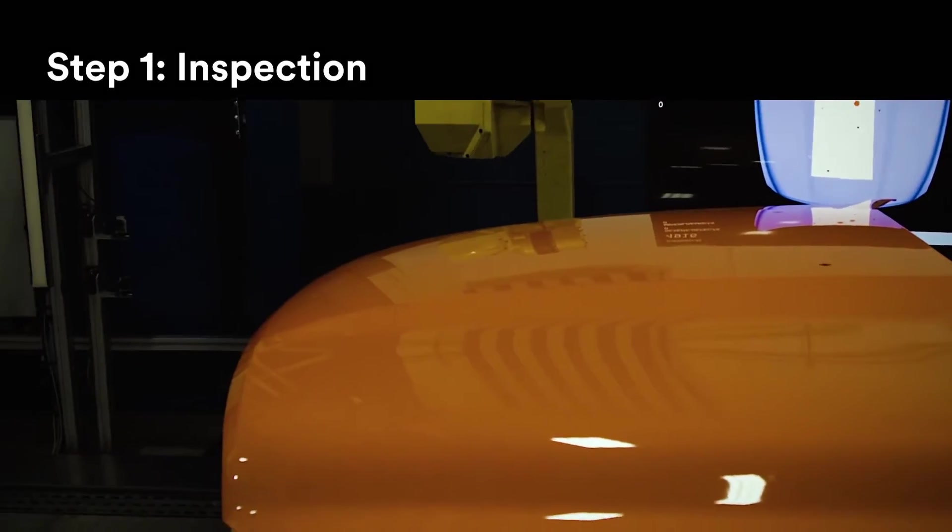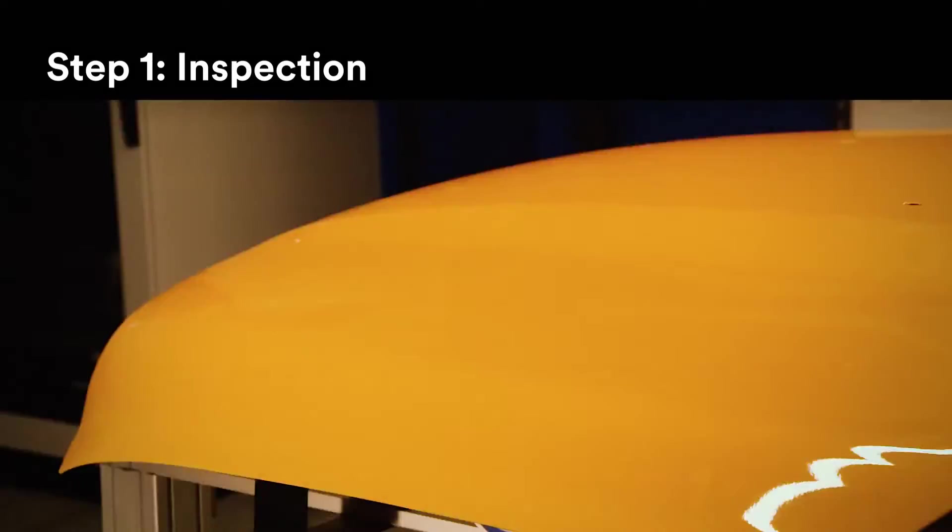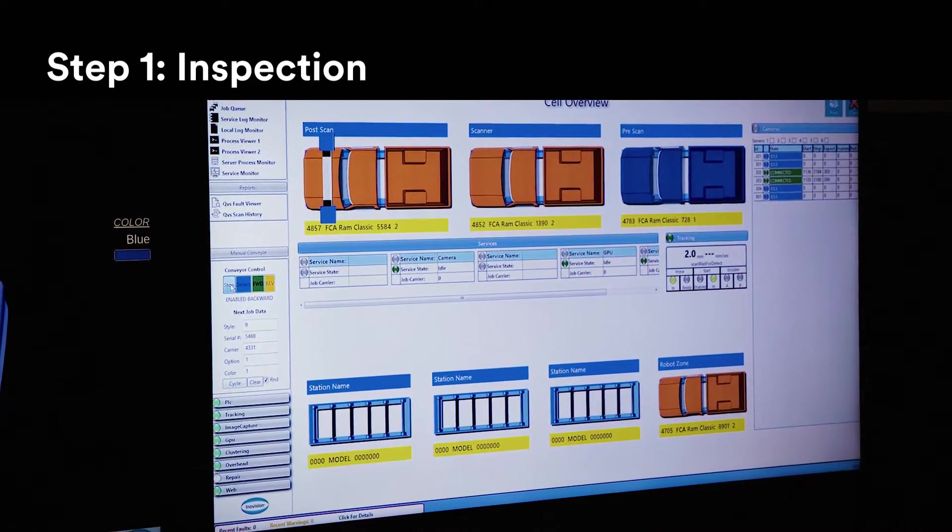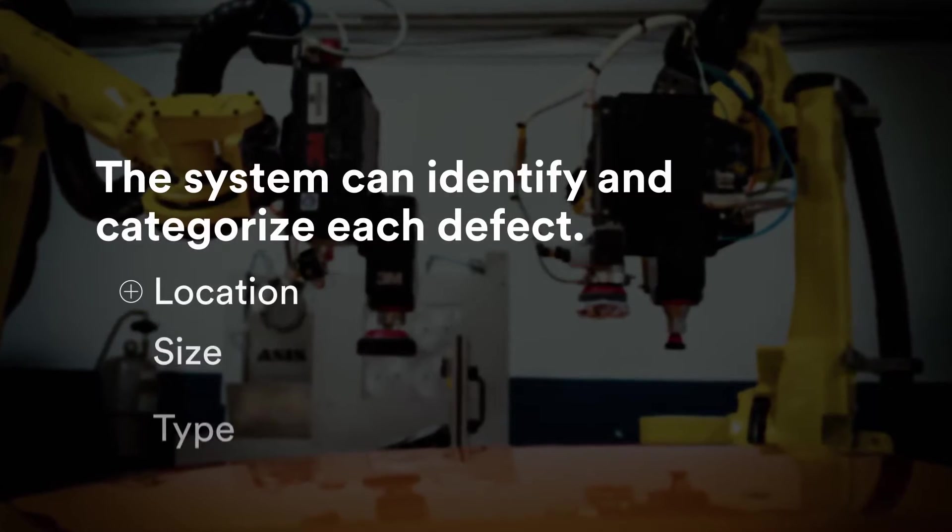The process begins with a high-tech vision system that inspects the vehicle from every possible angle. The system can identify and categorize each defect, including its location, size, and type.